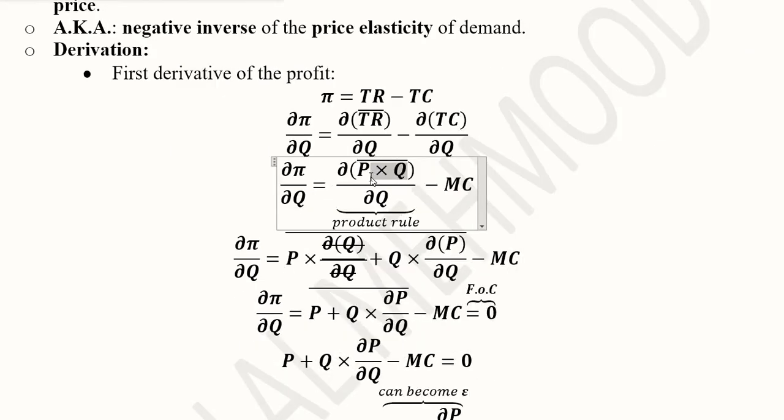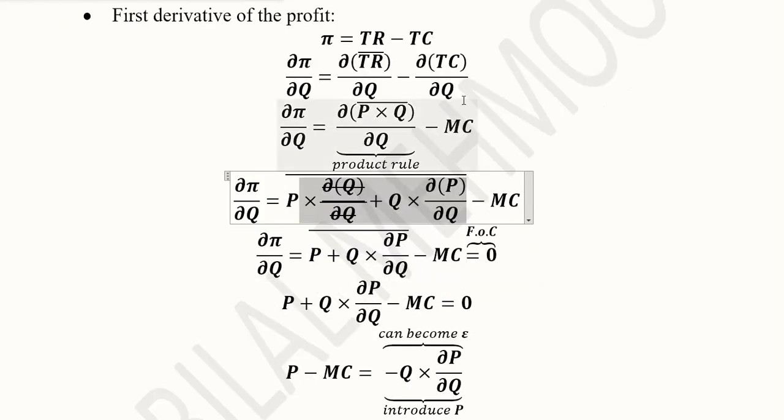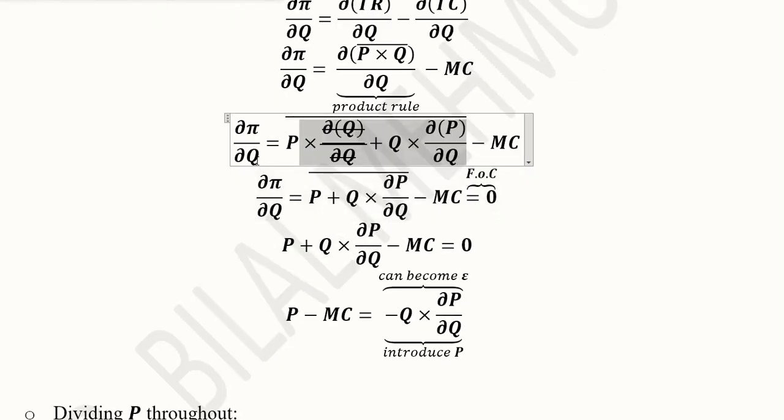Here we can apply the product rule of differentiation. This is the first term and the derivative of the second term plus the second term and the derivative of the first term. The total cost became marginal cost. Since it was the first derivative we can equate it to zero to make it the first order condition so that we get to profit maximization.